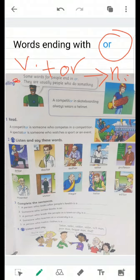Let's read together. Some words for people end in OR. They are usually people who do something. These verbs end with the letters OR and become nouns, indicating the person who does the action. For example, visit becomes visitor. Visitor means a person who visits.